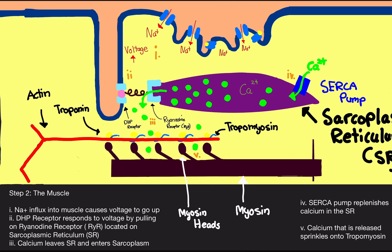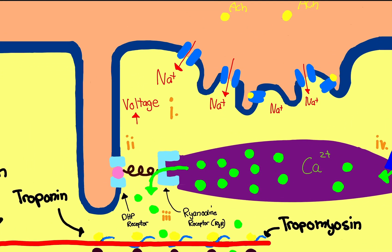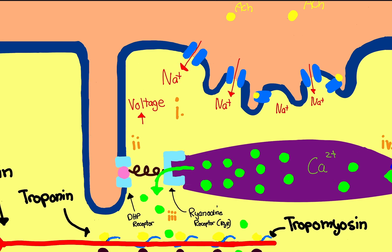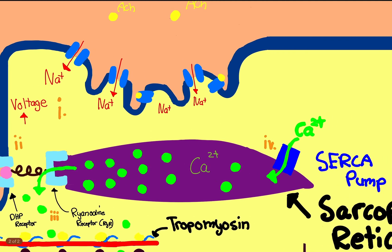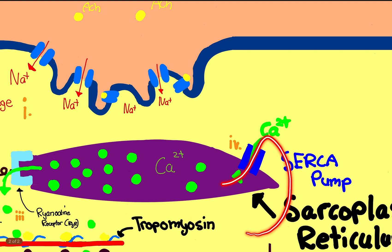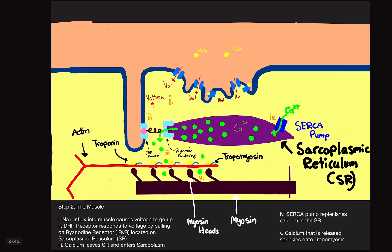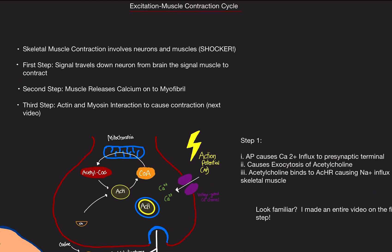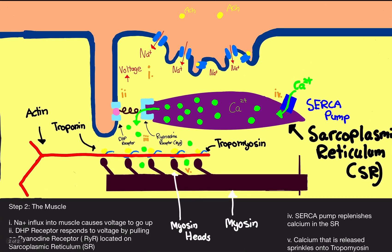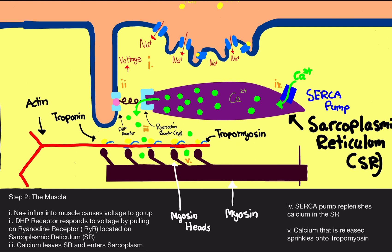The calcium released sprinkles onto tropomyosin. Quick recap: sodium rushes in because acetylcholine receptors are activated, the voltage goes up, the DHP receptor is sensitive to voltage and pulls on the ryanodine receptor, calcium leaves the sarcoplasmic reticulum and sprinkles on the tropomyosin, and the calcium re-enters the sarcoplasmic reticulum through the sarcopump. The next video will cover the interaction between actin, myosin, troponin, and tropomyosin. If you found this helpful, please like and subscribe.